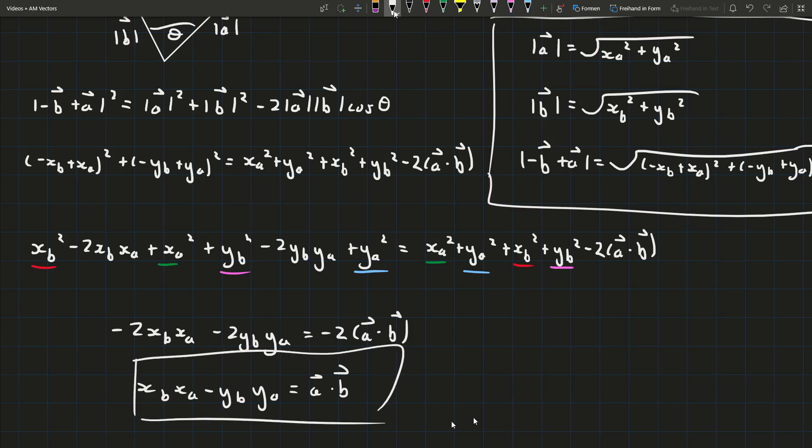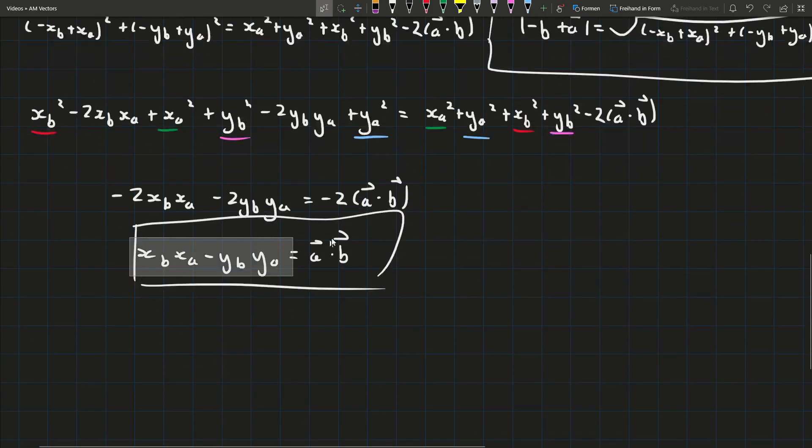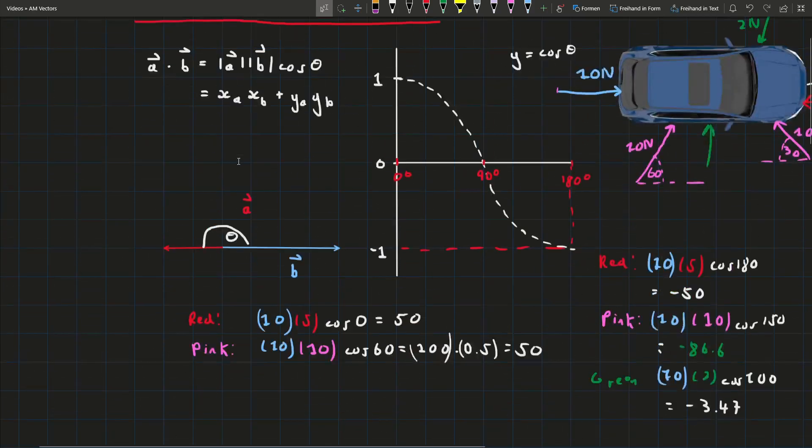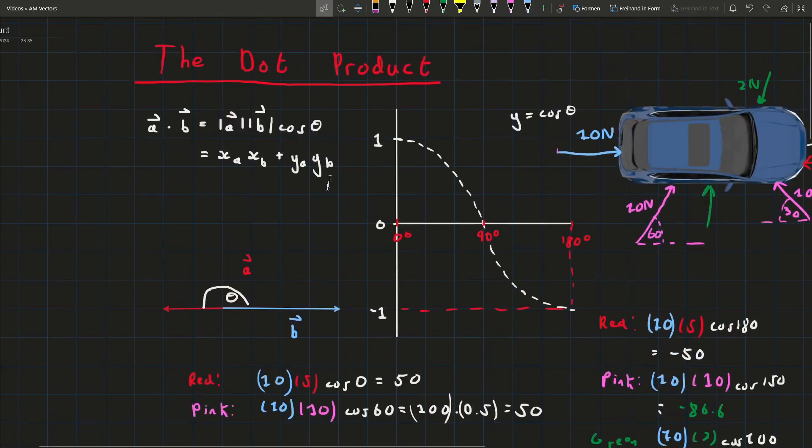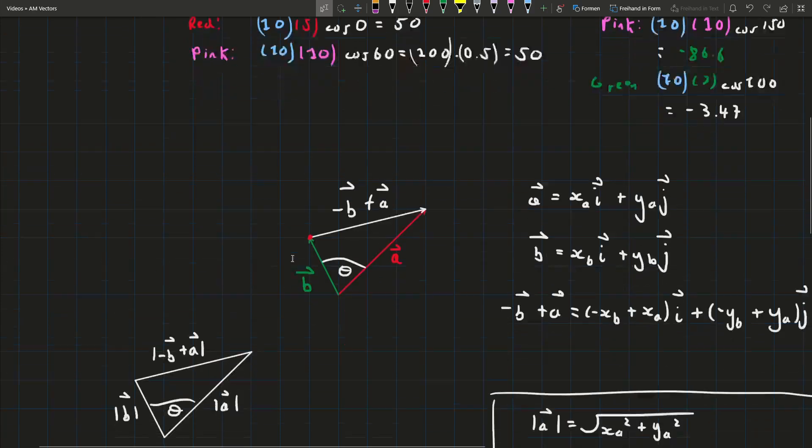We have now proven that this is a second alternative formula for the dot product and this is the exact same as this formula. So instead of in the applied maths exam for one of the years where you had to find the angle between two vectors instead of having to do all this messy trigonometry...